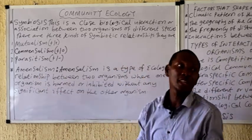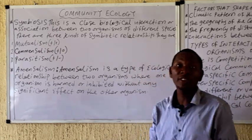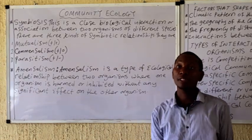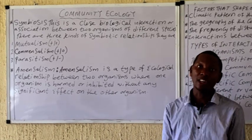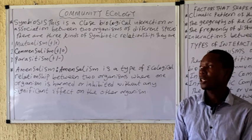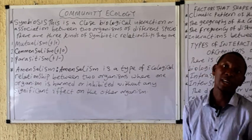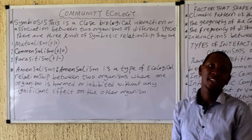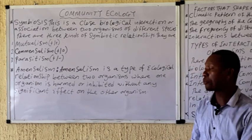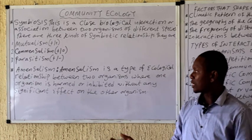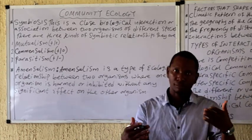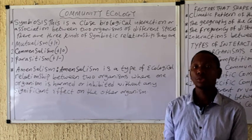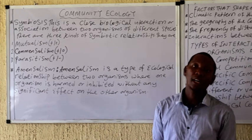Another type of association, though less commonly discussed, is amensalism — an association between two organisms of different species where one is harmed or inhibited while the other is unaffected. This is common in some plants that secrete chemicals into the environment which inhibit other plants from growing, while the secreting plant itself is unaffected. We also have predation, where apex predators such as lions and hyenas feed on prey like zebras. Please send your questions to biologyaccess@gmail.com and subscribe to support this channel. Thank you.